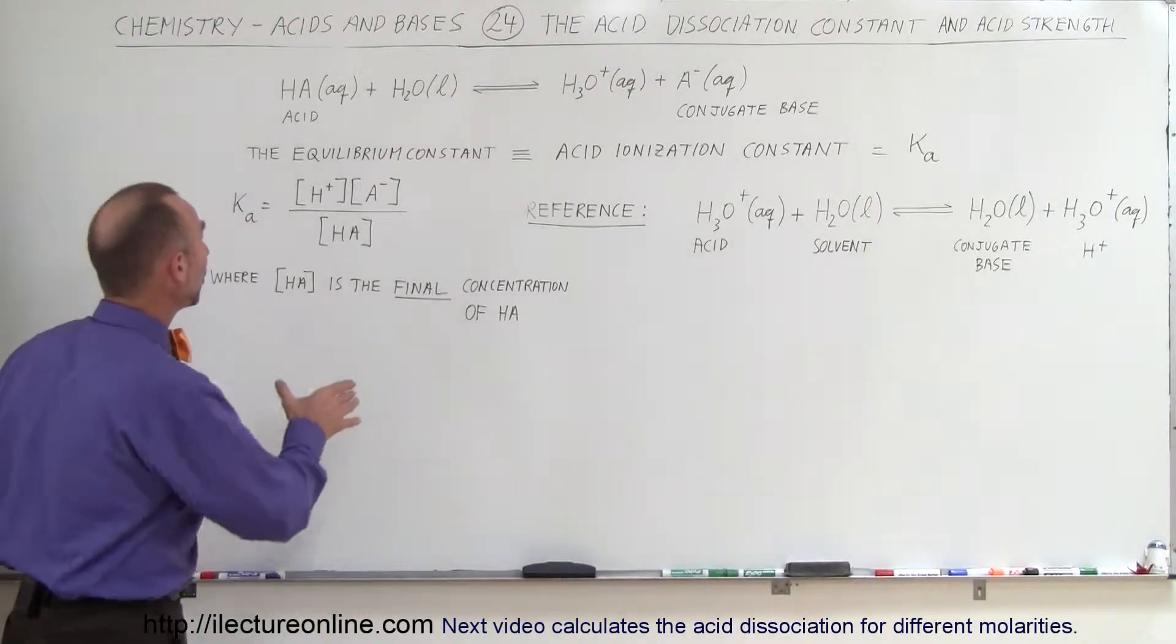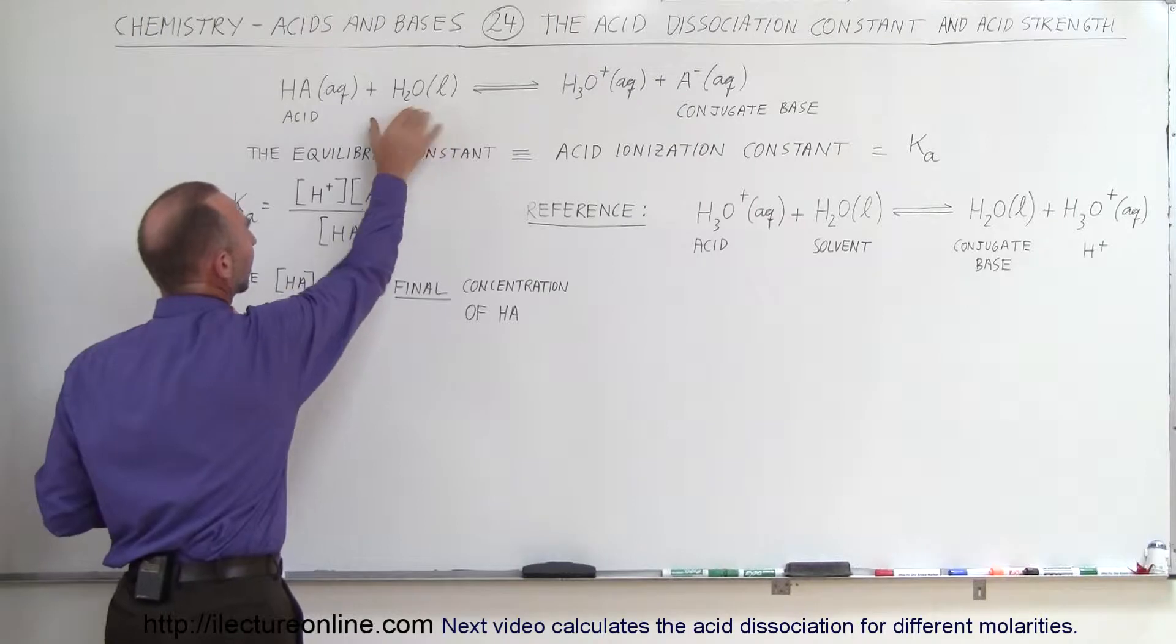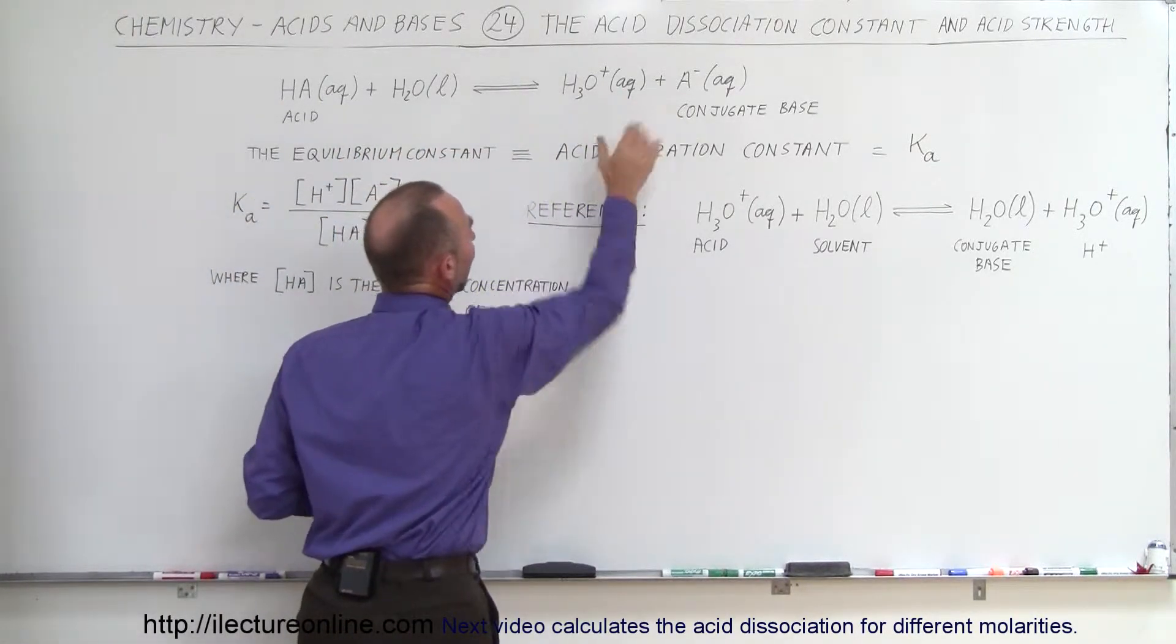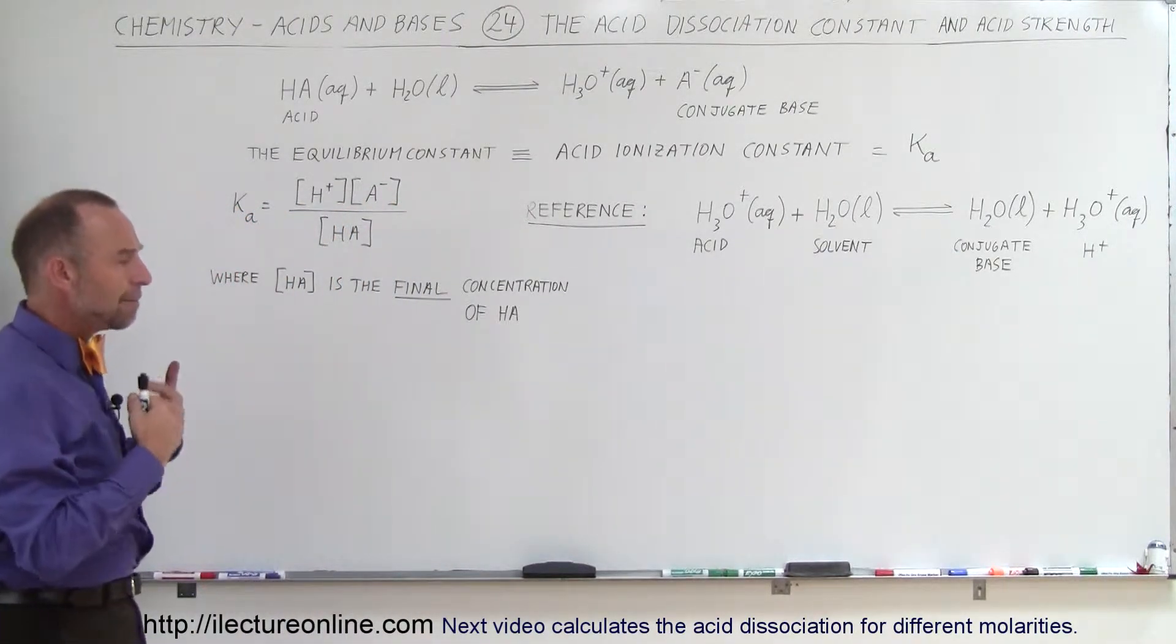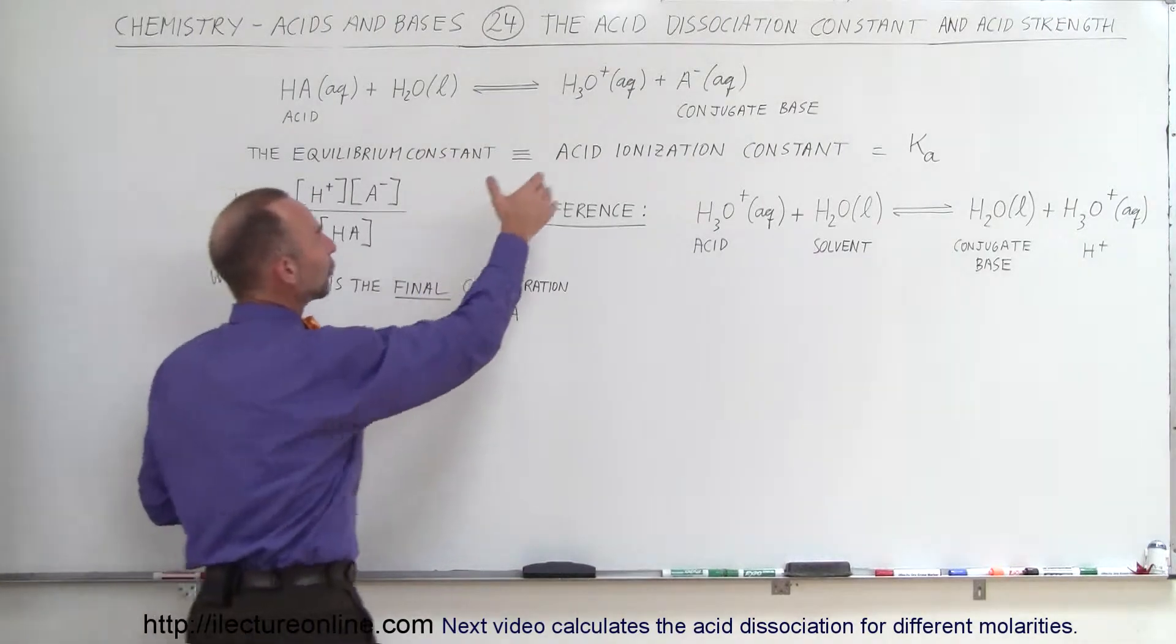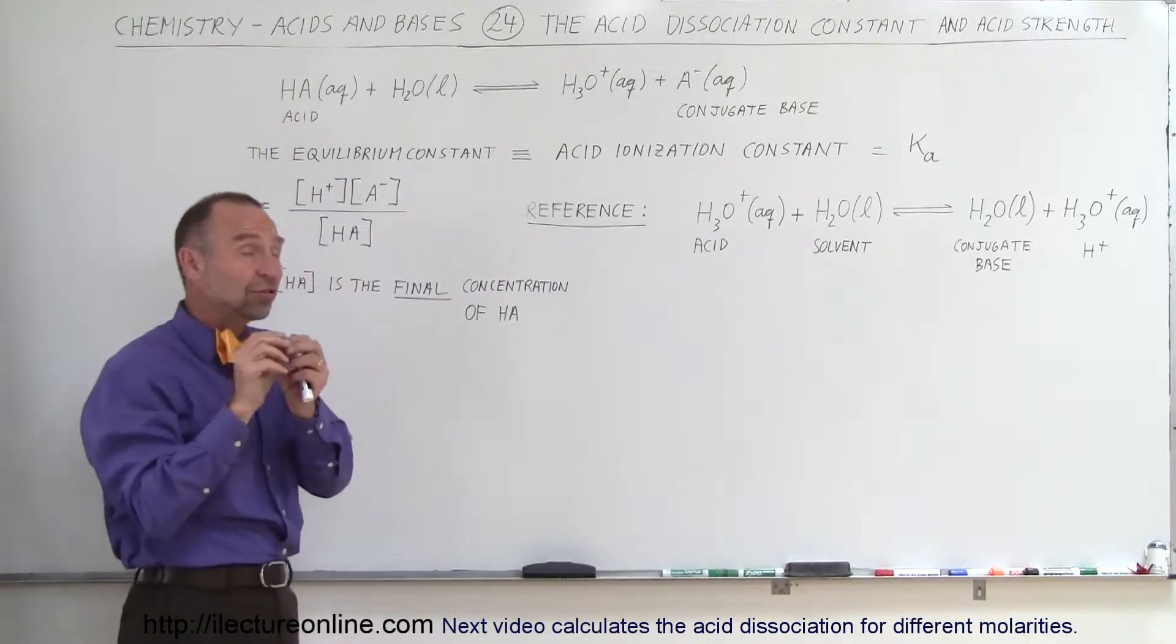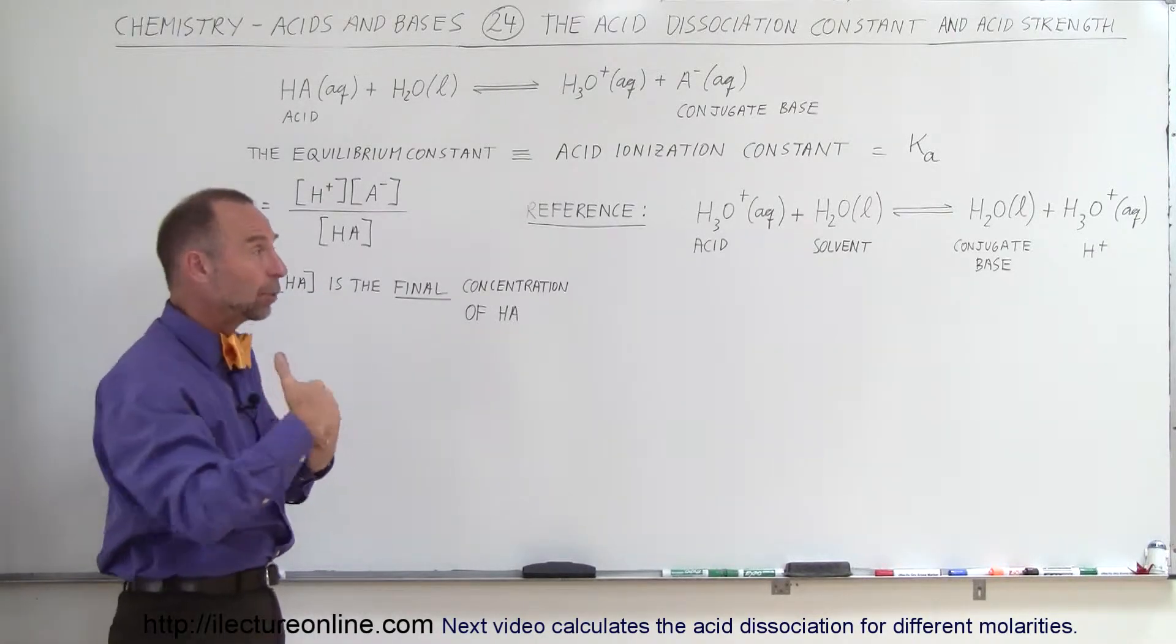Again going back to the definition, we have an acid and we put it into a solvent like water and the result will be that we end up with hydronium ions and the conjugate base ions. Now, the amount of the dissociation will of course determine how big the K is. If the dissociation is very small then the K will be a very small number, if dissociation is large then K will be a large number.